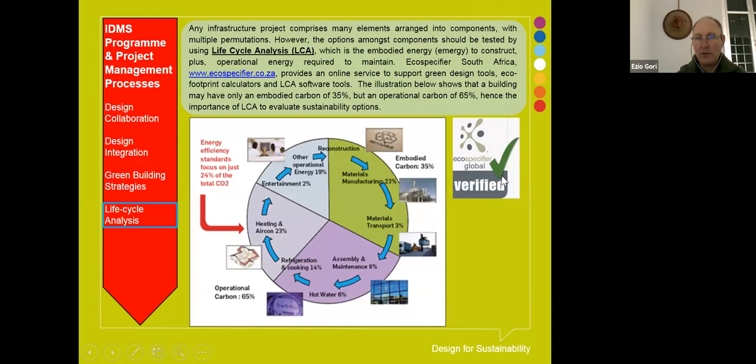For life cycle analysis: at least about 65% — and possibly up to 85% — of a building's lifetime costs arise from operation and use. Whatever we can do in the original capital investment to reduce operational costs will be worthwhile. This is where we look at materials and energy efficiencies. There are websites like eco-specifier where you can choose building materials and they will help you assess which are greener. These are all tools we can use to reinform the public sector about sustainable development.